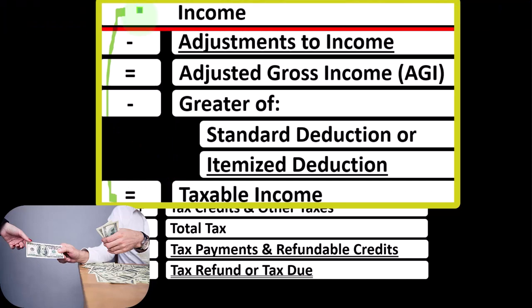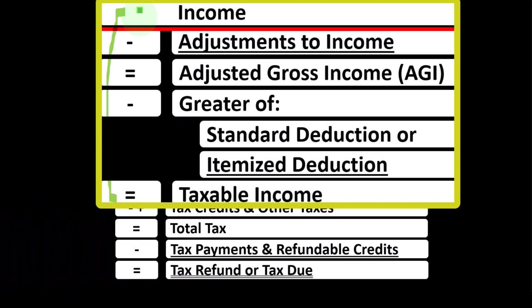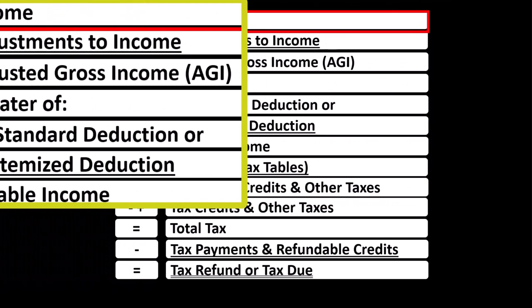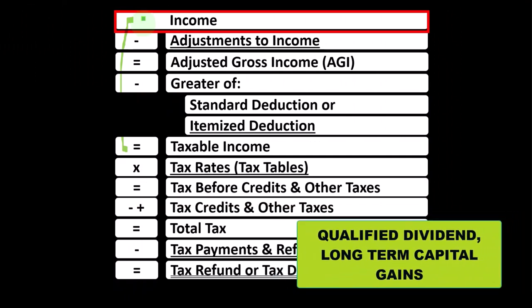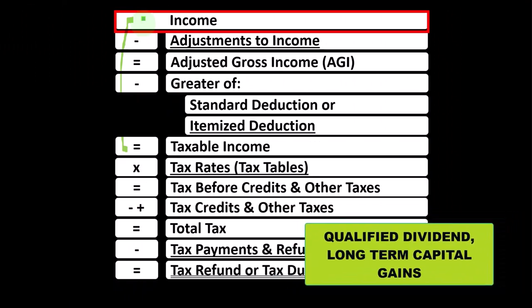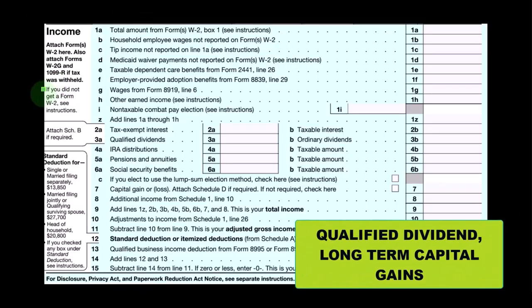Also noting that some types of income might have more favorable tax rates other than ordinary income tax rates, such as qualified dividends and long-term capital gains, for example.